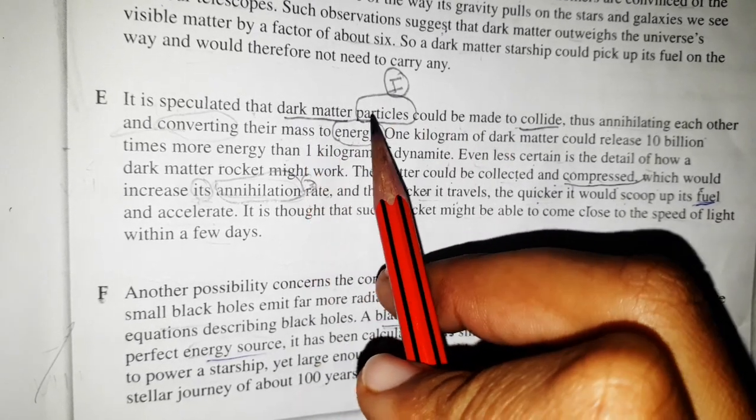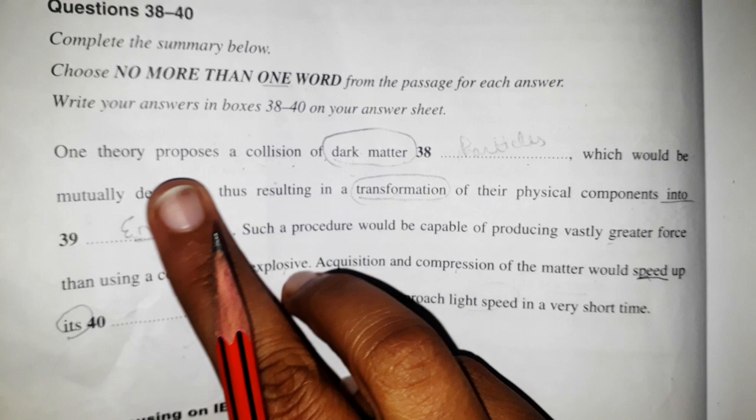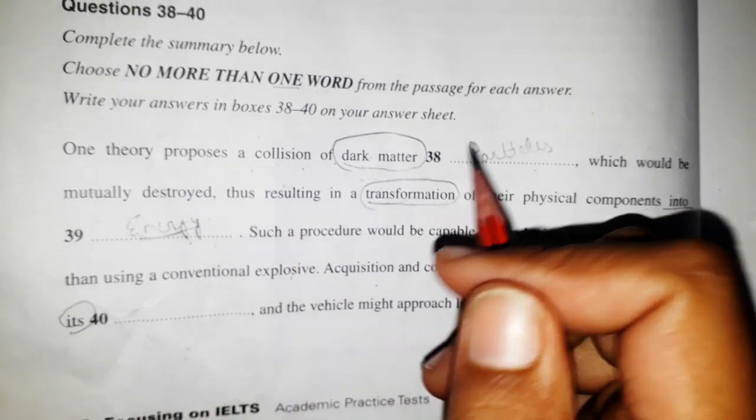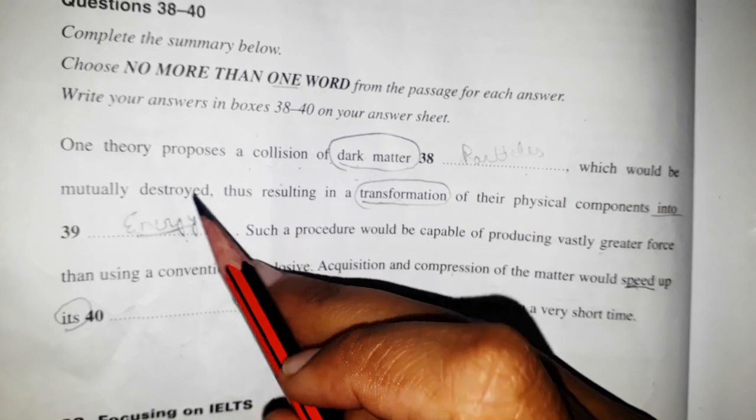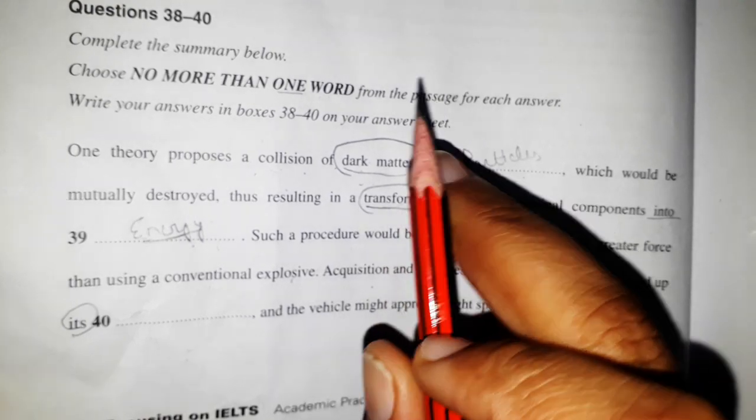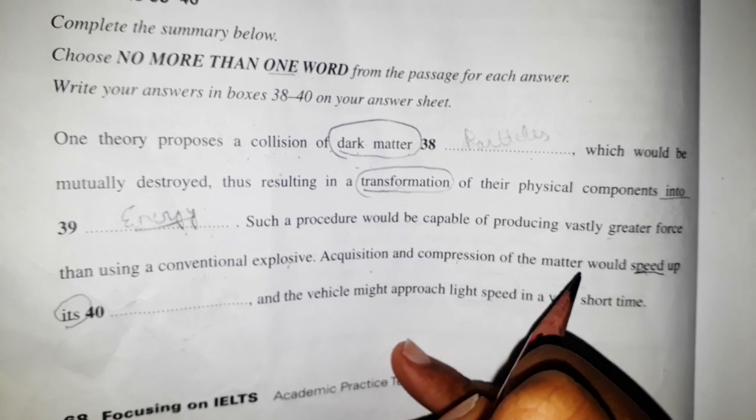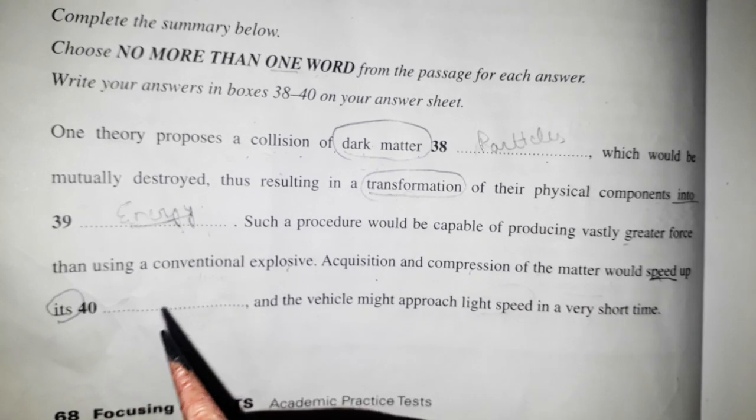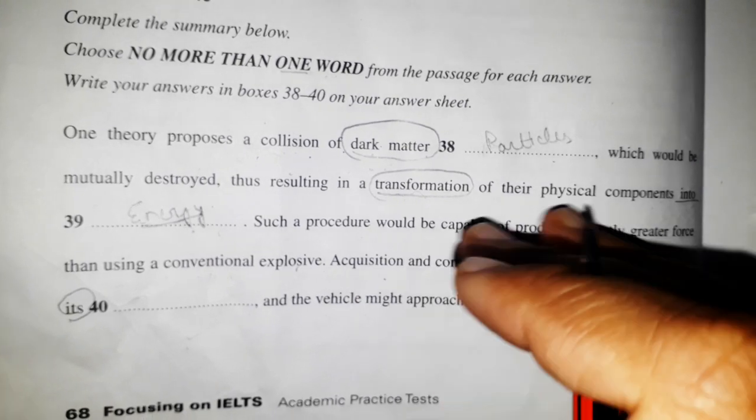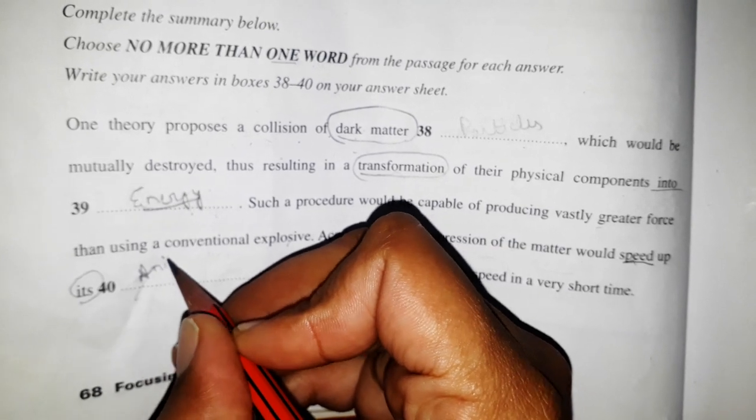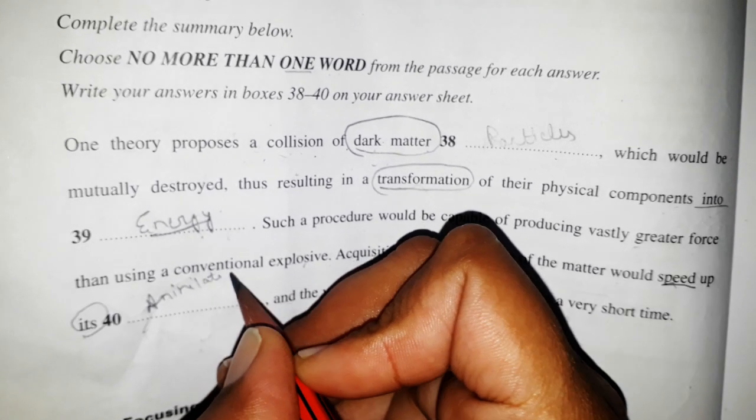What type of dark matter? Particles. So these are the answers for all the questions. One theory proposes a collision of dark matter - we got collision of dark matter in our question. Next one: physical transformation, which is conversion - what? Energy. Next one: compression of matter would speed up its what? Annihilation. Speed up, increase. So annihilation rate. There's the answer: annihilation.